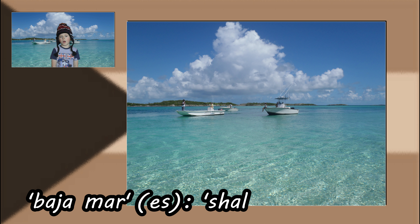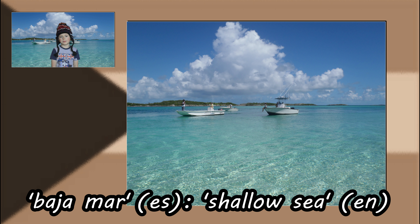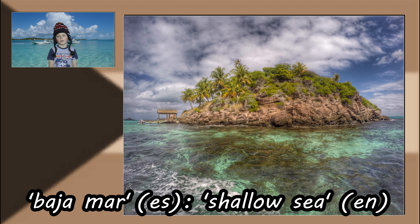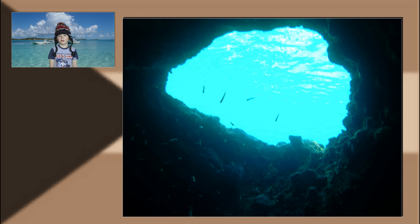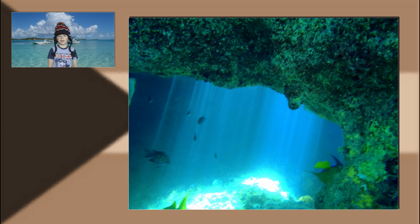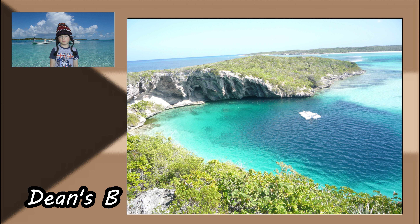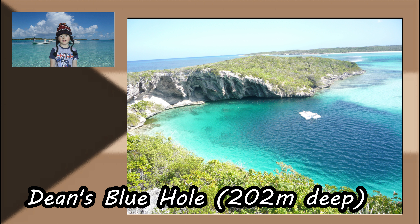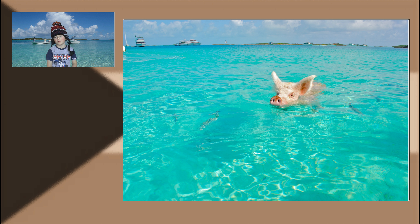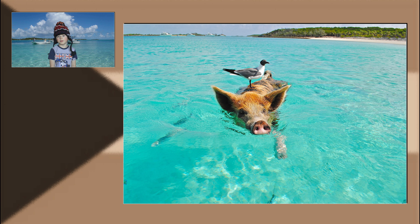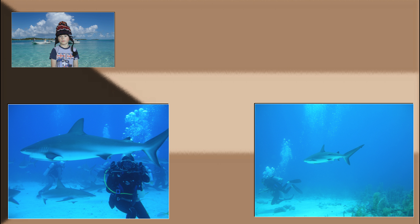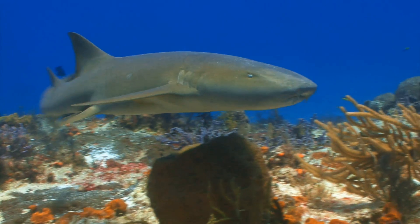The name Bahamas means 'shallow sea' in Spanish. The sea there is full of beautiful coral life, and they have one of the longest underwater cave systems in the world. They also have the second largest blue hole — a 200-metre deep hole in the ocean floor. With all this cool stuff, no wonder loads of people go there on holiday. Just look out, because the seas around the country have loads of sharks!